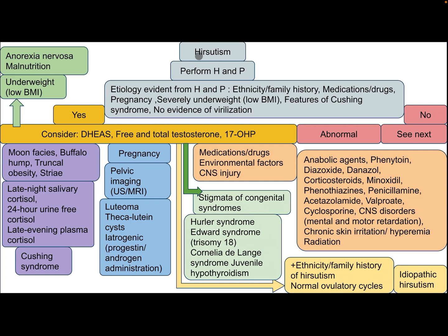How to approach the child with hirsutism after performing history and physical examination? If the etiology is evident from history and physical examination — like ethnicity, family history, medications, drugs, pregnancy, severe underweight, low body mass index, features of Cushing syndrome, and no evidence of virilization — treat accordingly. If there is underweight or low BMI, consider anorexia nervosa or malnutrition. Lab tests to consider include DHEA, free and total testosterone, and 17-hydroxyprogesterone.